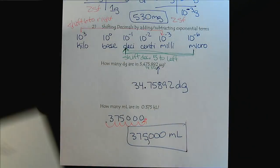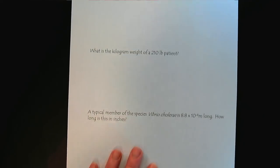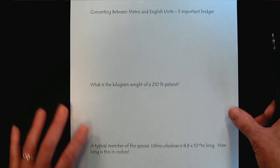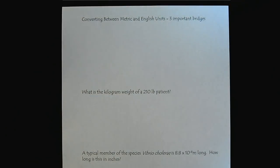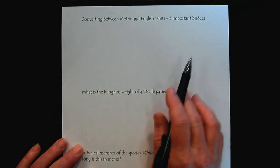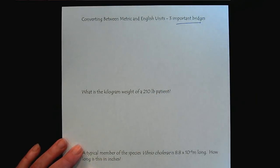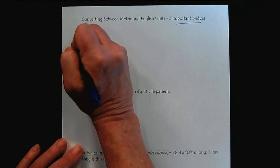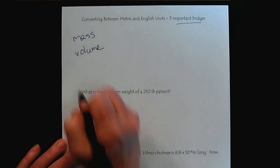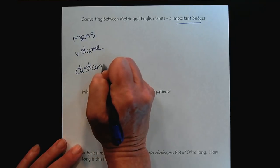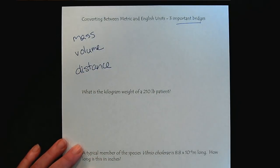So now with unit conversions, let's take our metric units and convert them into English units. Because we live in a country that still uses the English unit system. So in this case, it's important to have bridges. And the bridges are linked to the main descriptions of matter. So everything with matter has mass and volume. And then it can be helpful to also have a distance conversion.